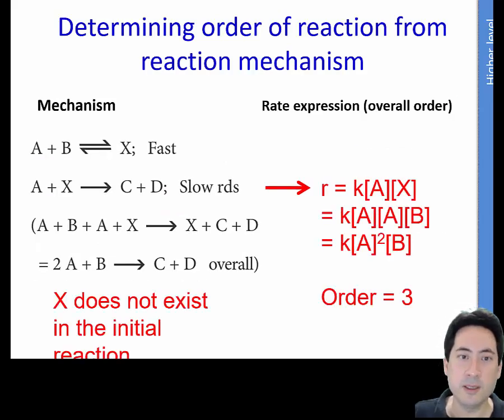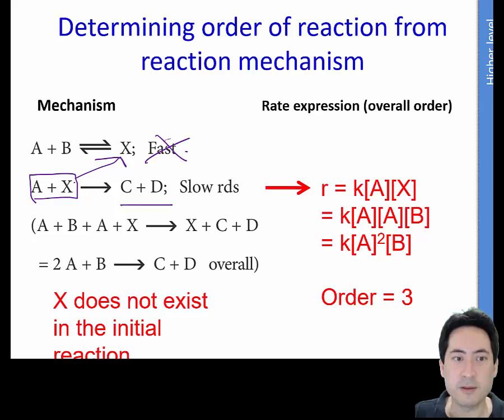This one here, again, we just get rid of the fast reaction. We have the slow, so it's A and X. The problem is we don't start with X. We start, so we need to substitute the X with the A and the B. And so what we have here is AAB, and so we put it's A squared. So the overall order is to the power of, is 3. Another example, again, don't worry about the fast one, that's not going to determine the rate.